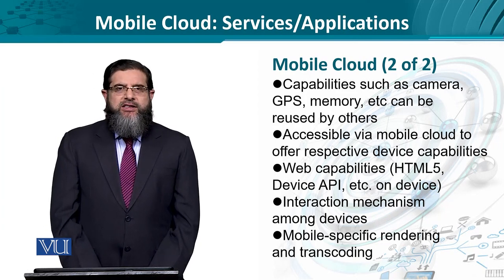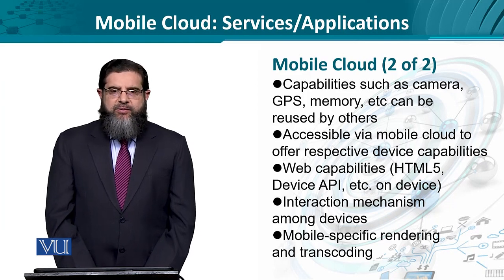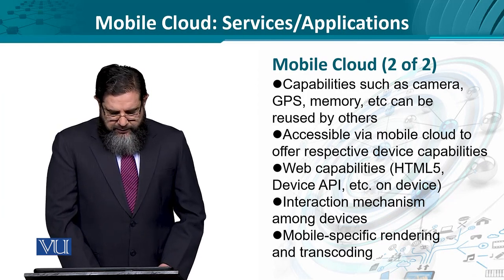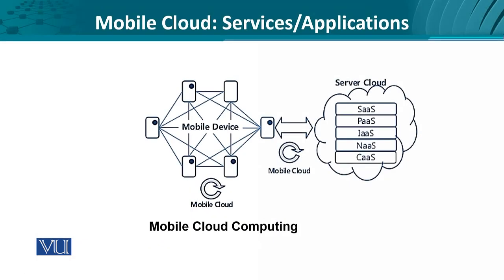Since each mobile phone has a specific screen size and specifications, the responsibility lies with the cloud environment to offer the output in something which is renderable at the mobile phone. Broadly, in a bird's eye view, we could think about mobile cloud computing as a mesh of mobile devices which are not directly connected to each other using technologies like Wi-Fi or Bluetooth, but are connected to the cloud to access the array of services offered there. Each mobile phone could access services from other mobile phones or offer its own services through the cloud.